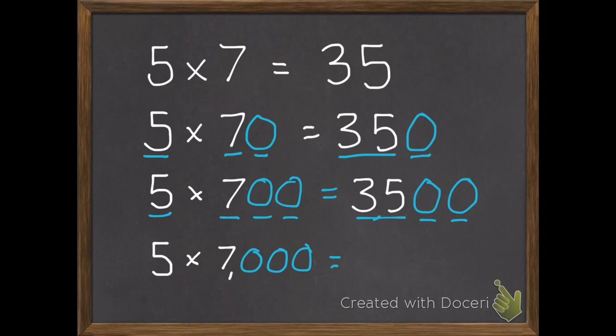And again, five times seven thousand, five times seven thousand is thirty-five thousand, plus one, two, three zeros.